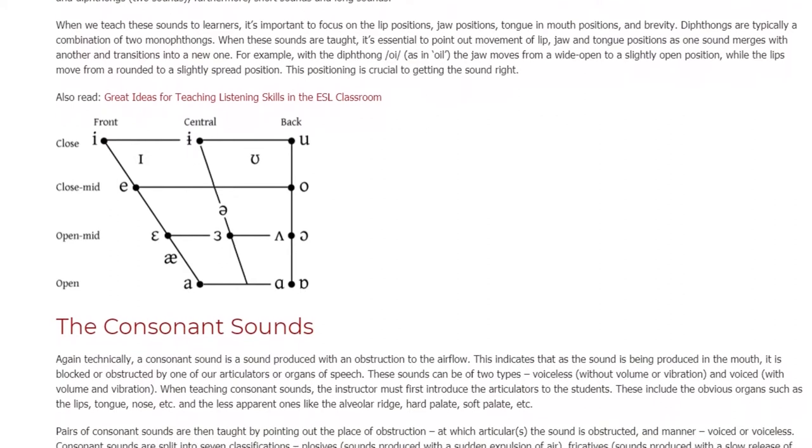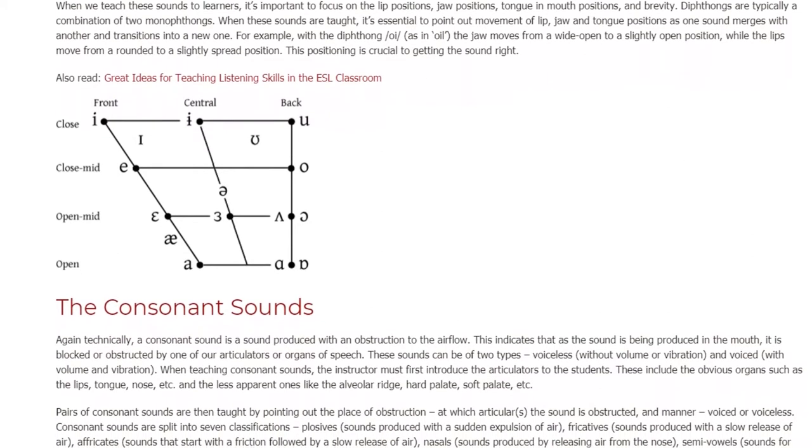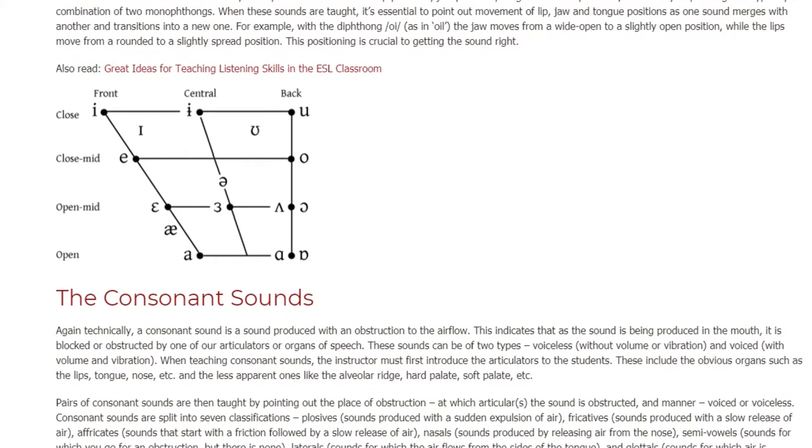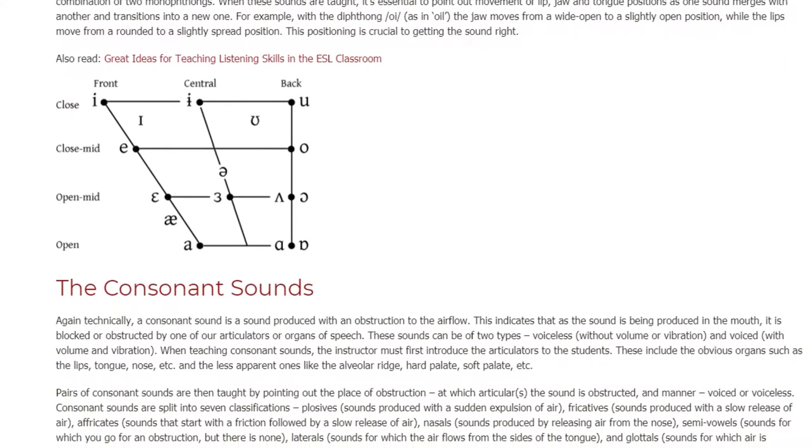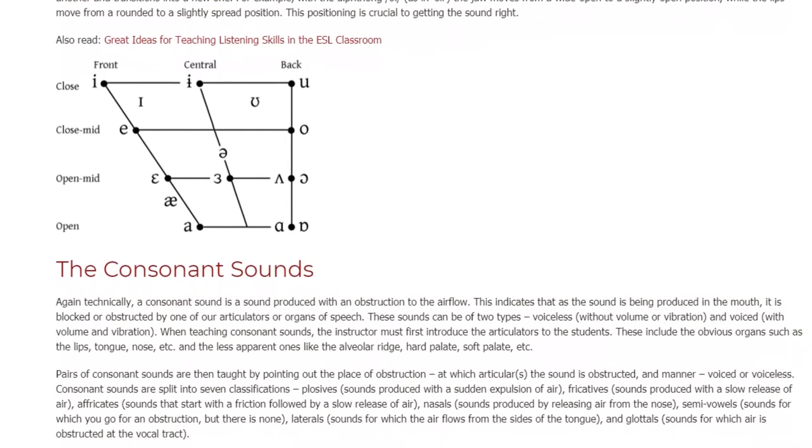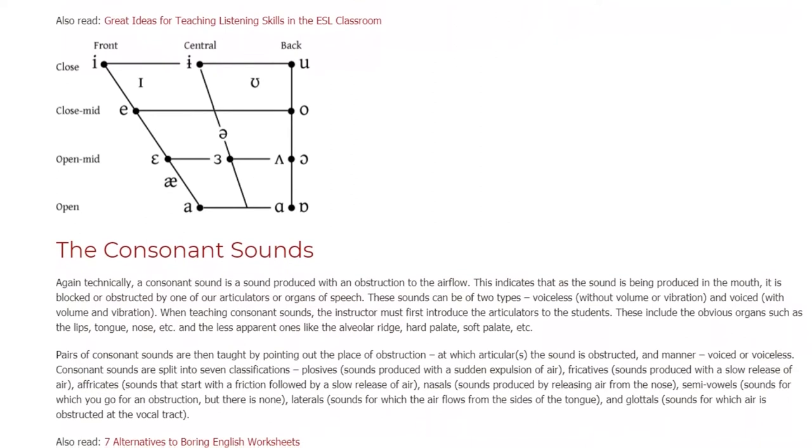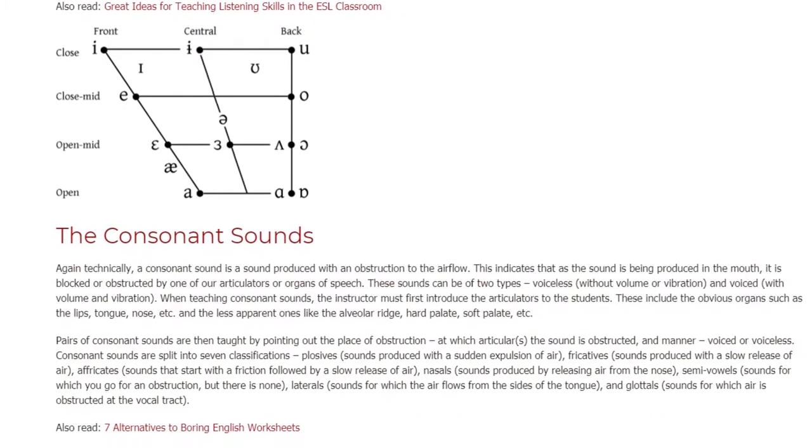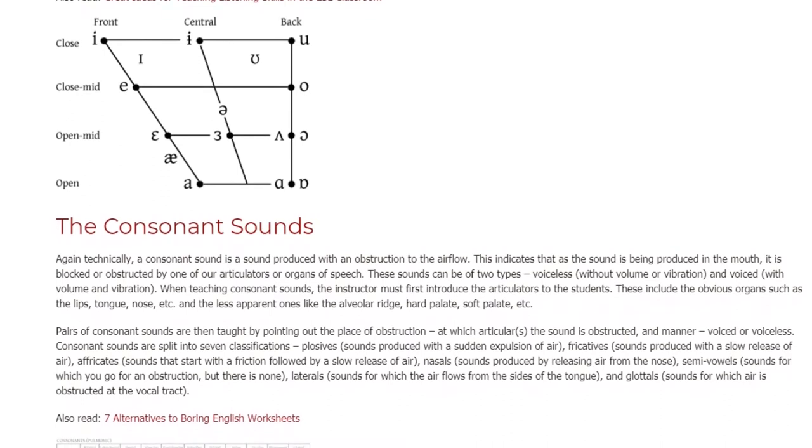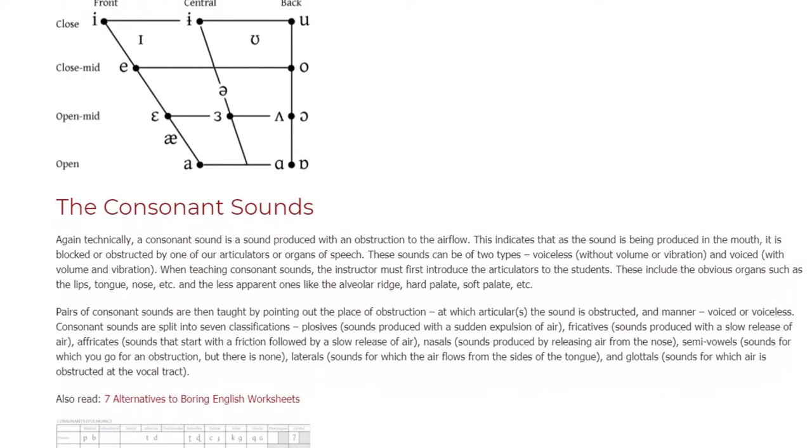The Consonant Sounds. Again technically, a consonant sound is a sound produced with an obstruction to the airflow. This indicates that as the sound is being produced in the mouth, it is blocked or obstructed by one of our articulators or organs of speech. These sounds can be of two types: voiceless (without volume or vibration) and voiced (with volume and vibration).